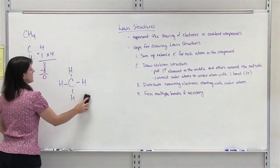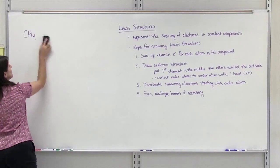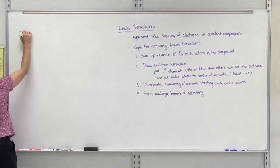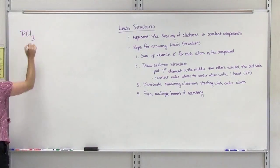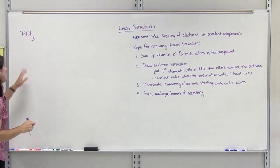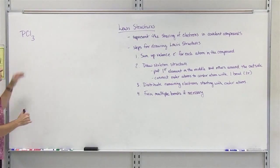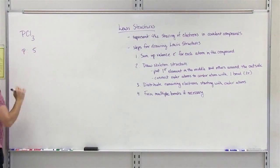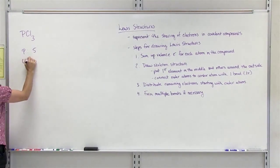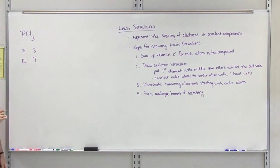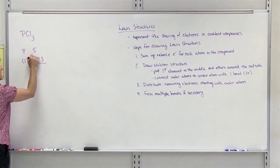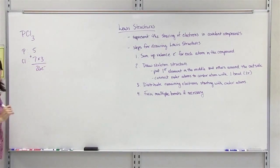Let's do another example: phosphorus trichloride, PCl₃. First step: sum up the valence electrons. Phosphorus is in group 5A, so it has 5 valence electrons. Chlorine is in group 7A, so it has 7 valence electrons. We have 3 chlorine atoms, so we multiply by 3. When we add it up, we should have 26 electrons.